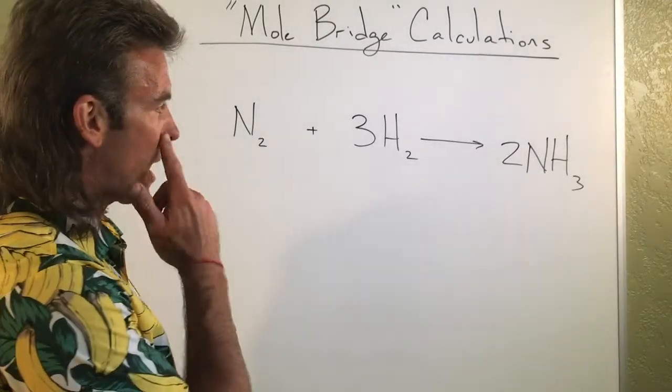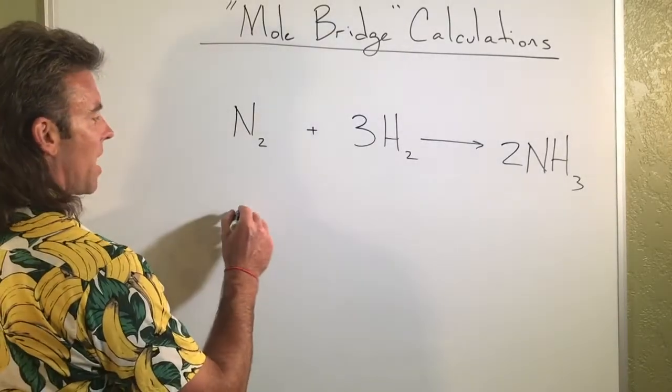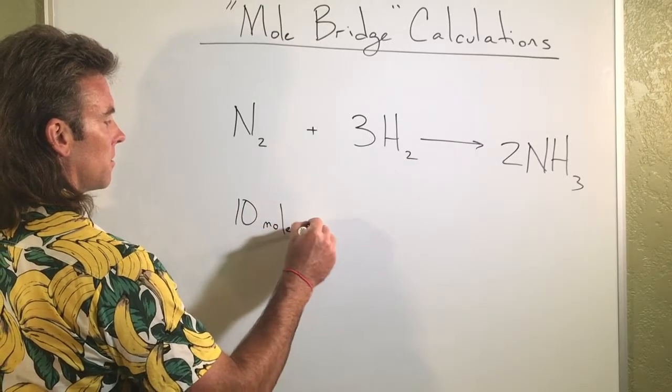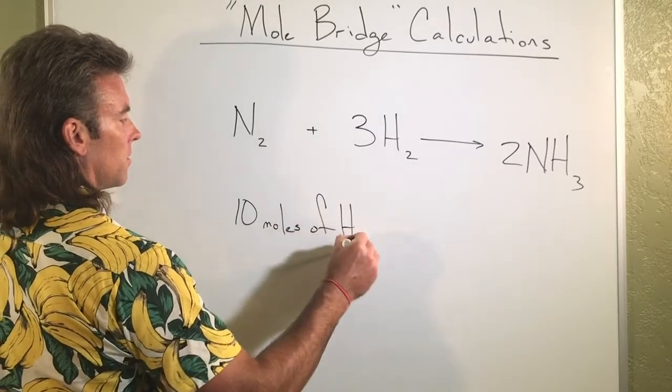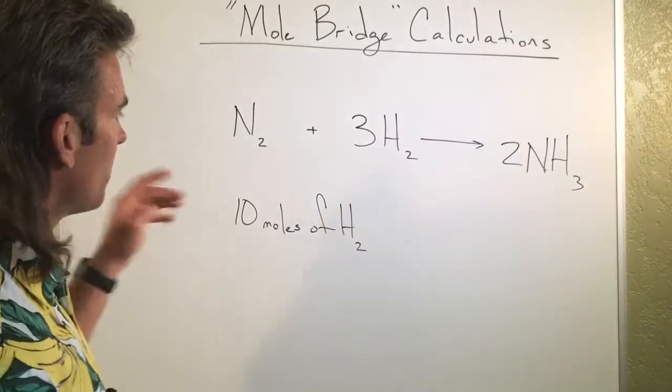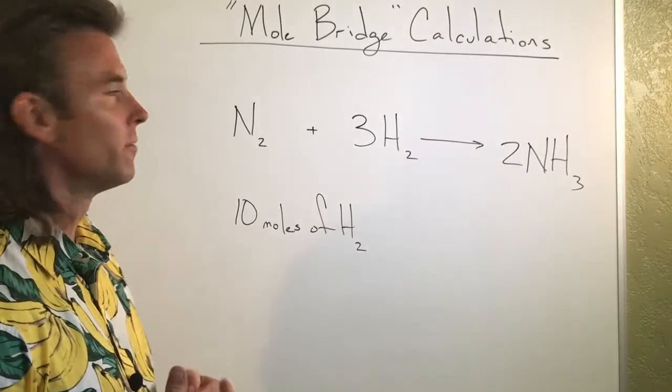Let's say that I have 10 moles of H2. And what I want to do with that is my 10 moles of H2, I know that I can make a certain amount of ammonia.